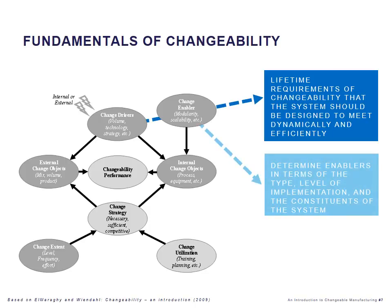Having determined the requirements of change, we need to determine how we want to accomplish these changes. Changeability, whether it's flexibility or reconfigurability, is implemented through change enablers. These change enablers can be modularity, scalability, convertibility, and many other types, and they are usually distinguished as being either soft or logical, or hard physical enablers. The second step is to determine the right enablers of change in terms of the type, the level of implementation — basically the structuring levels of the company — and the constituents of the manufacturing system in which these enablers need to be implemented.